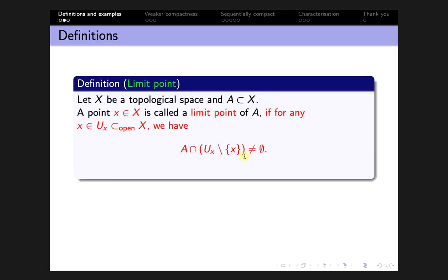First we recall the definition of a limit point, then we define limit point compactness. Let X be a topological space and A a subset of X. A point x in X is called a limit point of A if for any open subset U_x of X containing x, the intersection of A with U_x minus the singleton {x} is non-empty — that is, every deleted neighborhood of x intersects the set A.